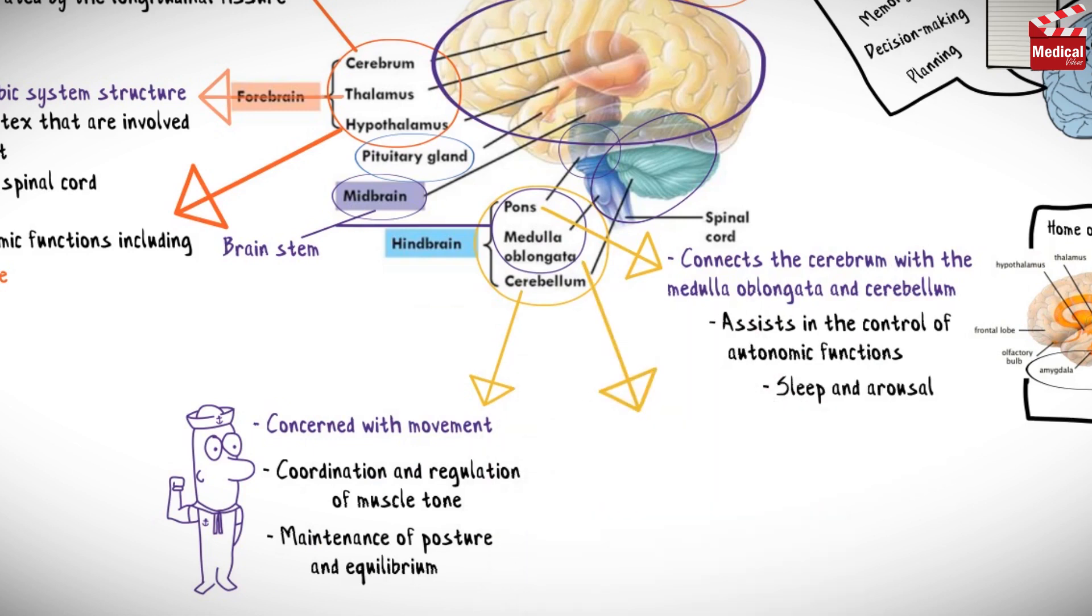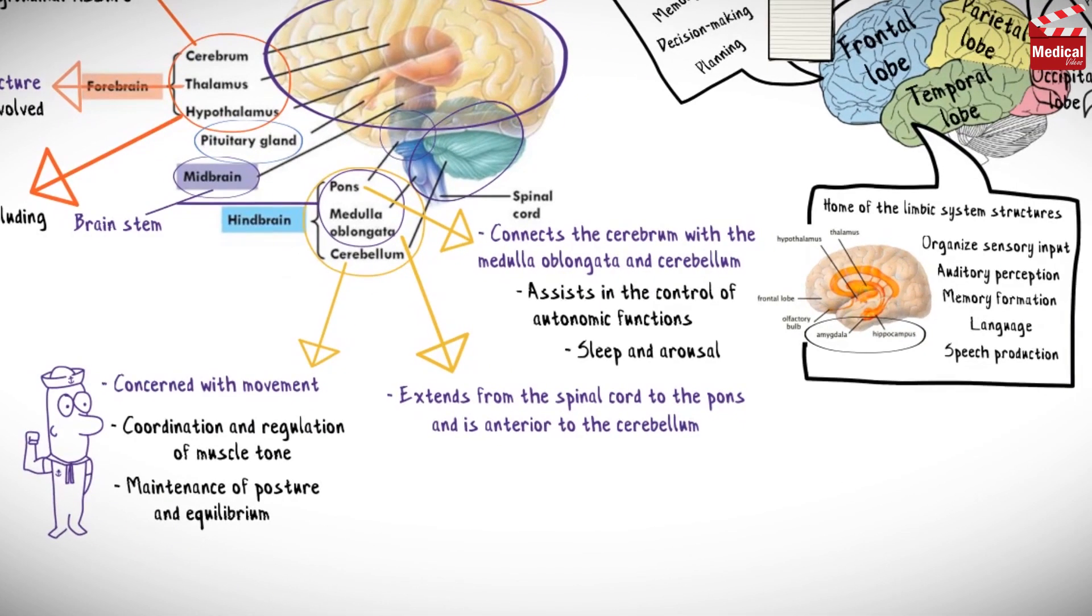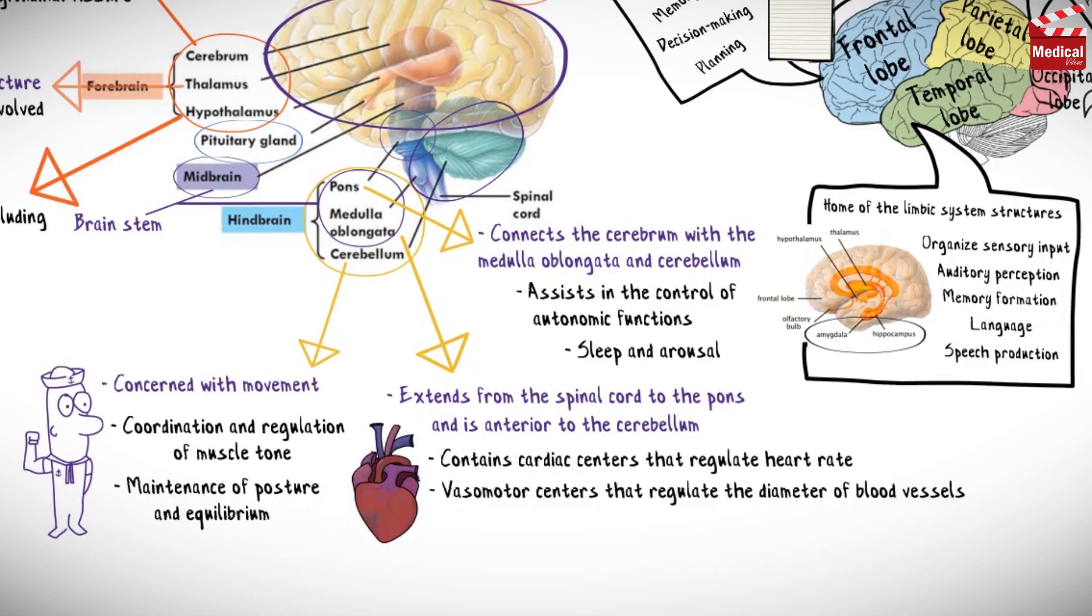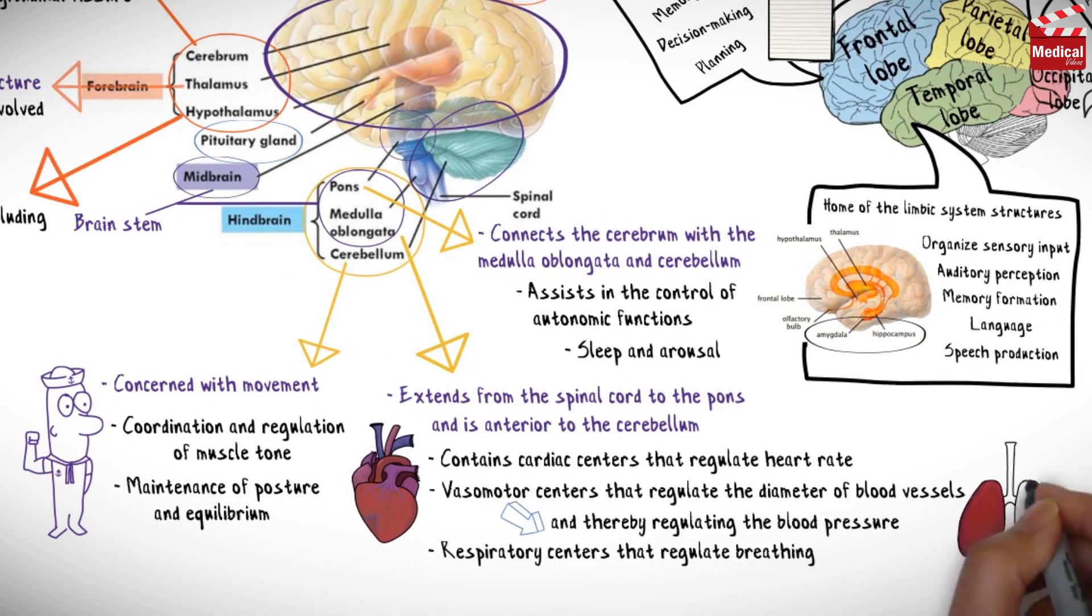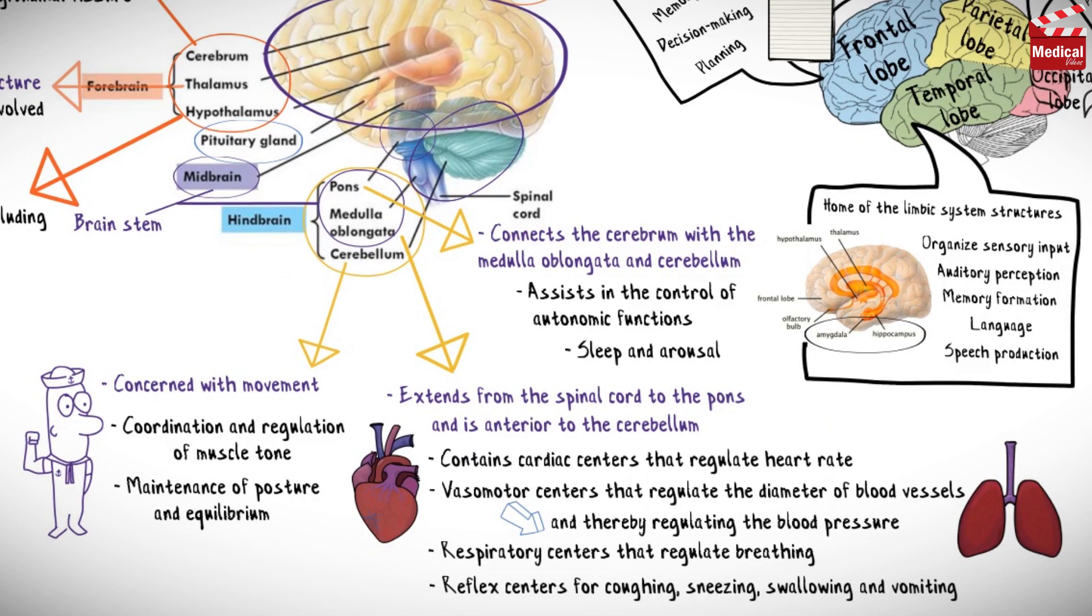The medulla extends from the spinal cord to the pons and is anterior to the cerebellum. It contains cardiac centers that regulate heart rate, vasomotor centers that regulate the diameter of blood vessels and thereby blood pressure, and respiratory centers that regulate breathing. Also in the medulla are reflex centers for coughing, sneezing, swallowing, and vomiting.